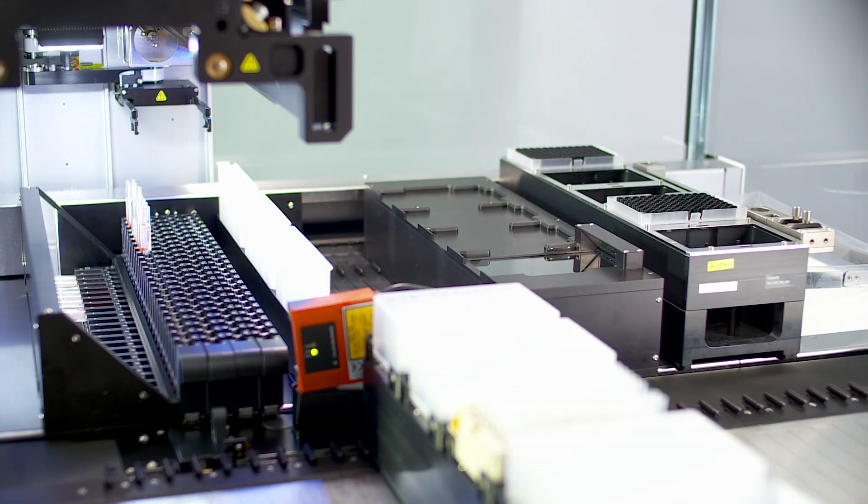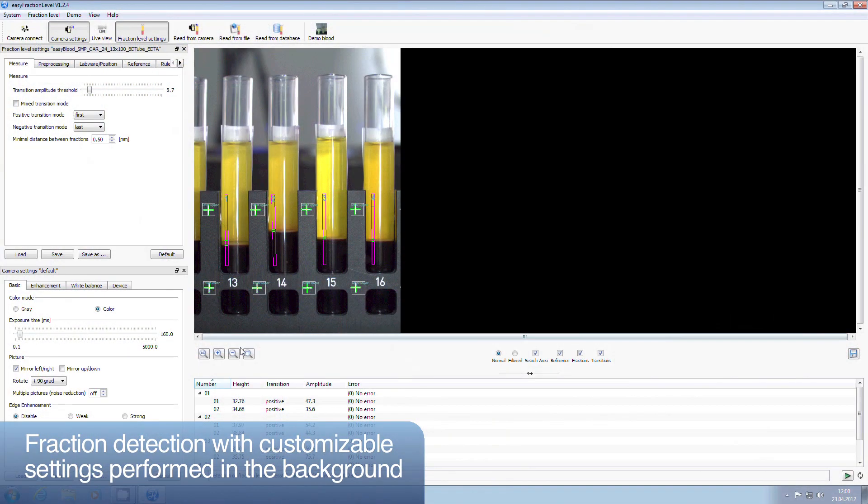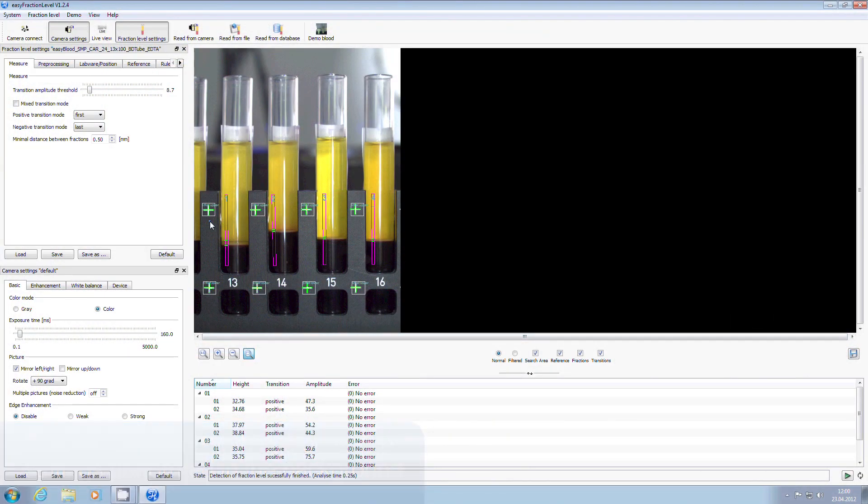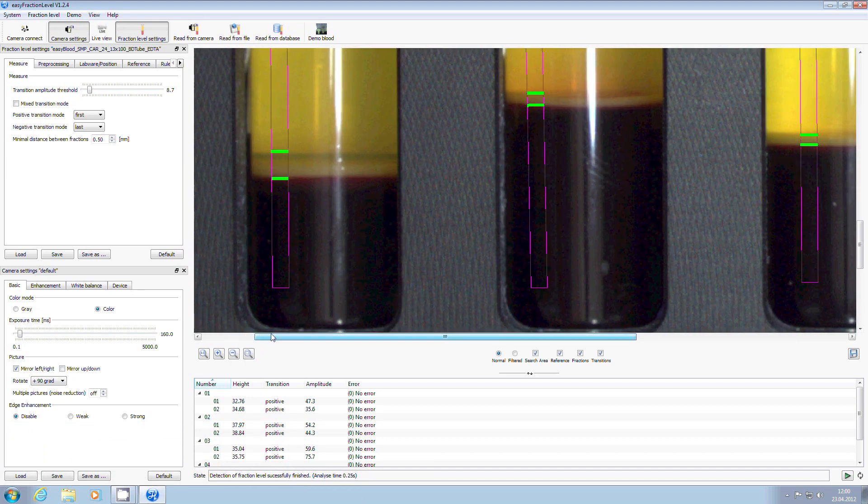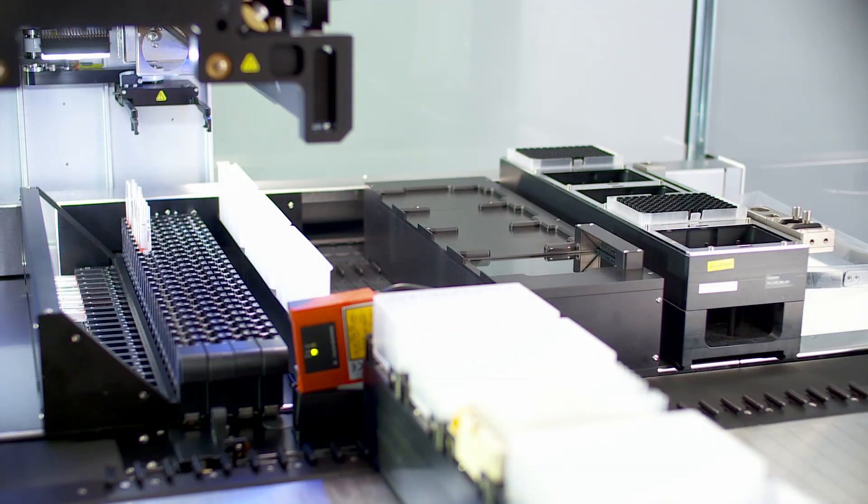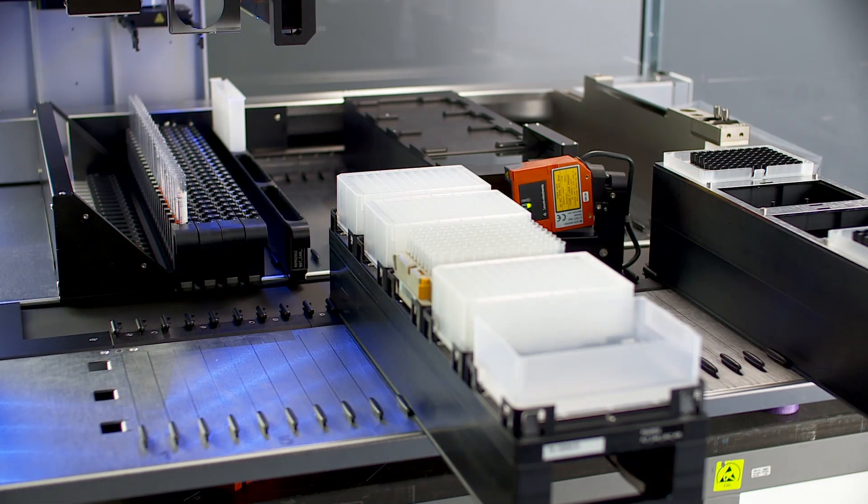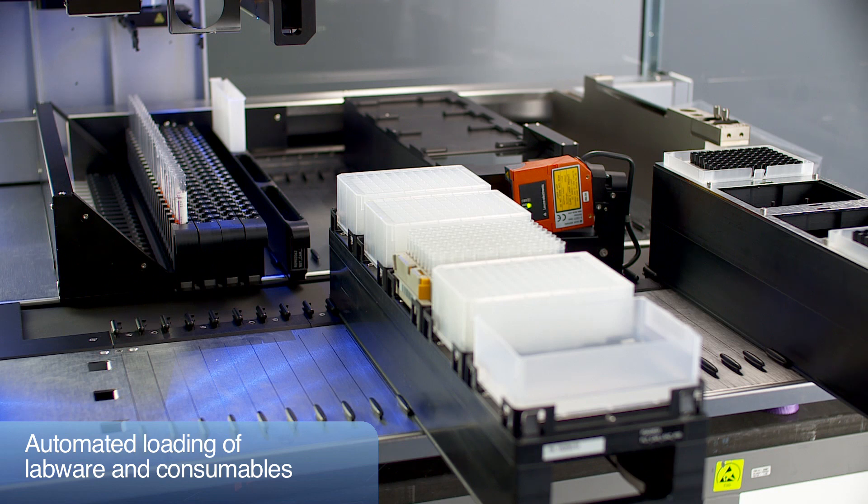The buffy coat is identified and its height stored for pipetting. An image of each tube is saved and can be sent to the LIS for complete sample tracking. Samples which do not comply with the user-definable requirements are automatically excluded from the pipetting process.